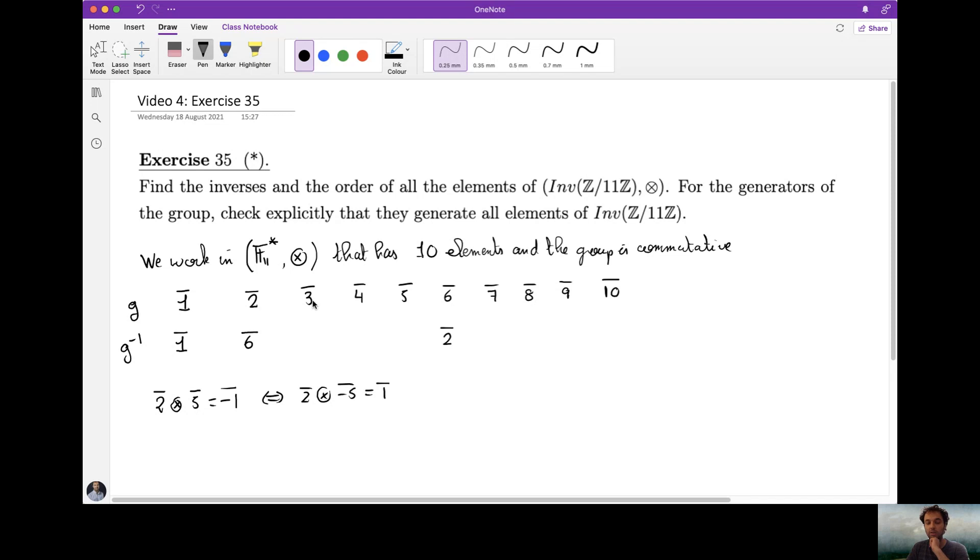3, I can notice that 3 times 4 is 12, modulo 11 that's 1, so the inverse of 3 is 4, therefore the inverse of 4 is 3. Same idea, the inverse of 5, exactly doing the same calculation, it should be minus 2. Minus 2 is 9, so the inverse of 5 is 9, the inverse of 9 is 5.